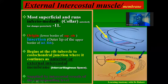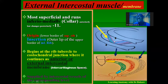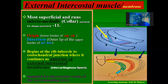The external intercostal muscle is supplied by the intercostal vessels of the corresponding level. For example, the external intercostal muscle in the third intercostal space is supplied by the third intercostal vessels. The intercostal vessel supplying a given external intercostal muscle corresponds to its numbered intercostal level.